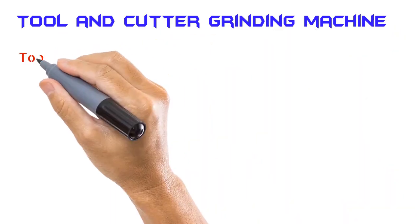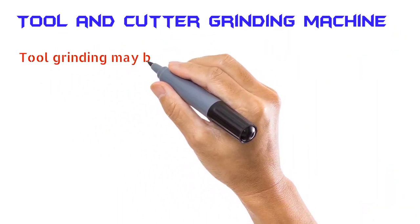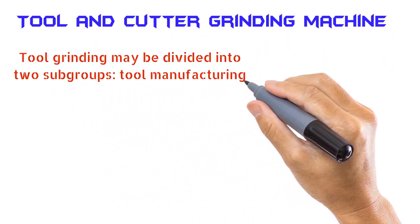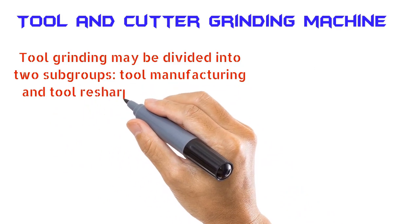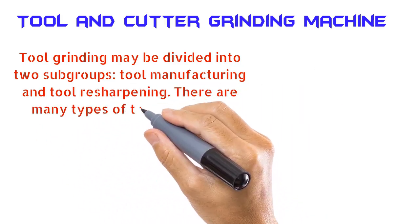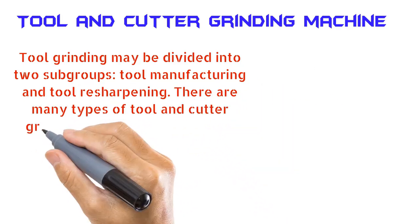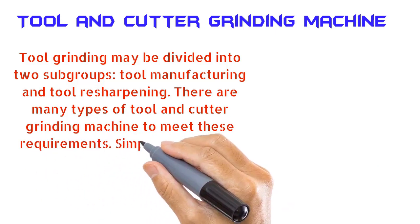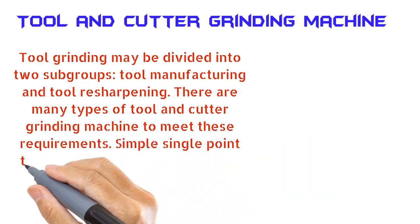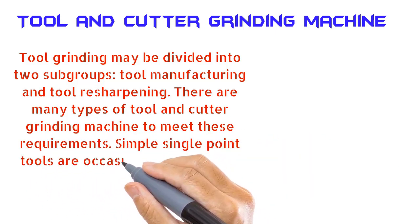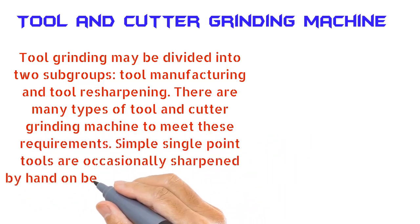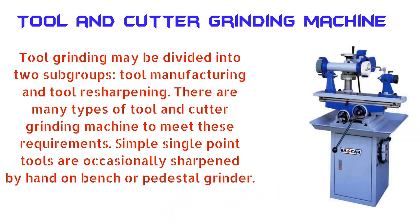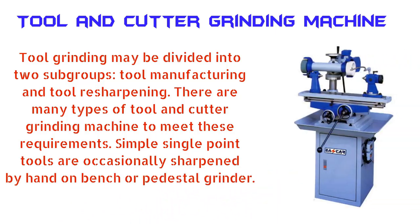Tool grinding may be divided into two subgroups: tool manufacturing and tool resharpening. There are many types of tool and cutter grinding machines to meet these requirements. Simple single point tools are occasionally sharpened by hand on a bench or pedestal grinder.